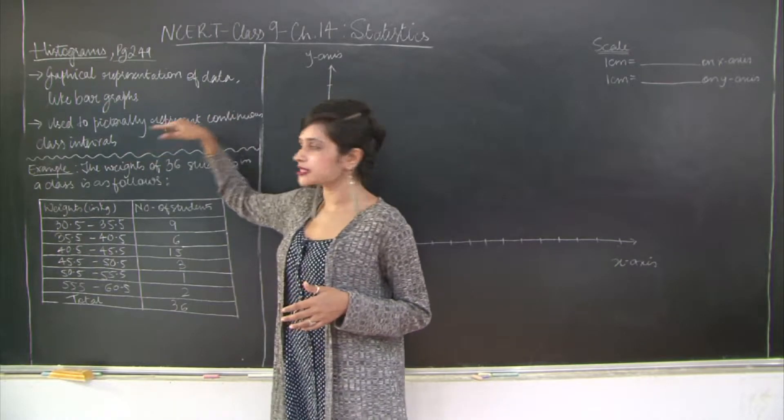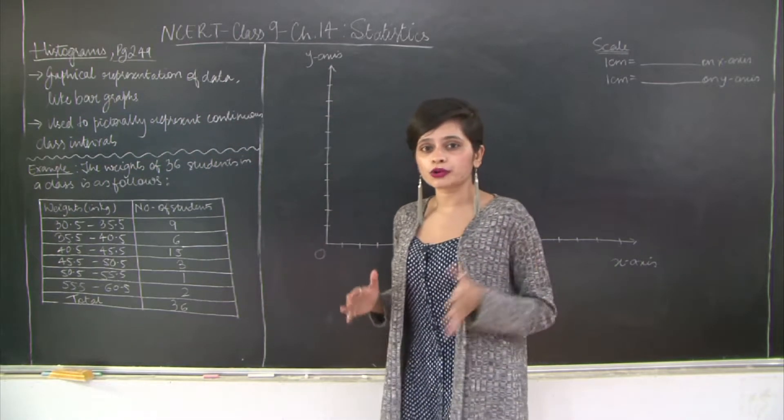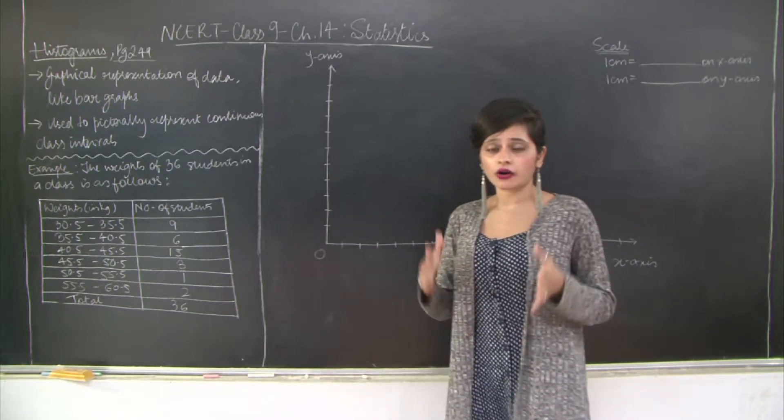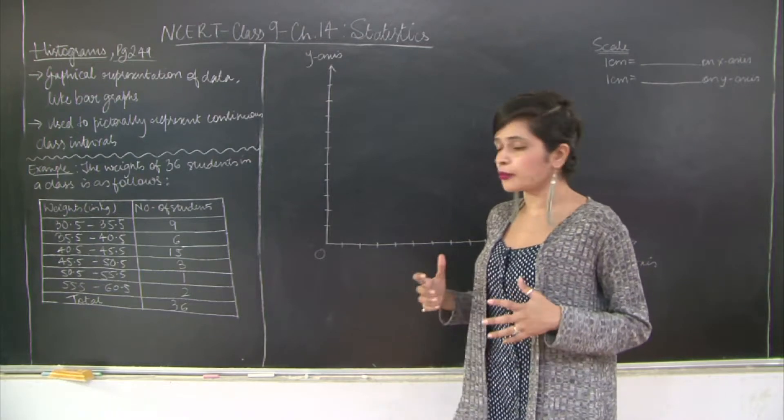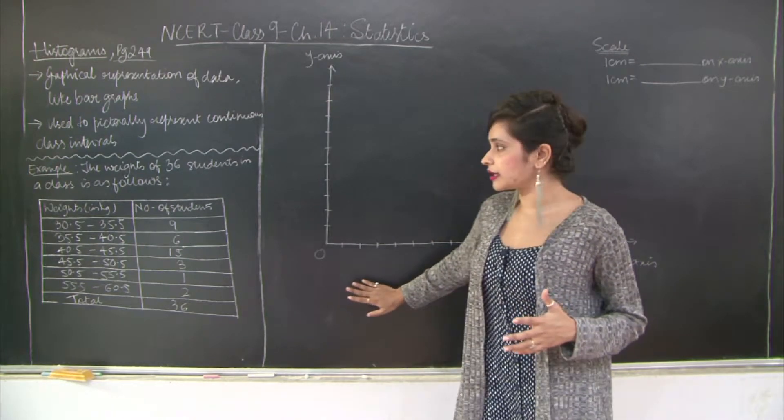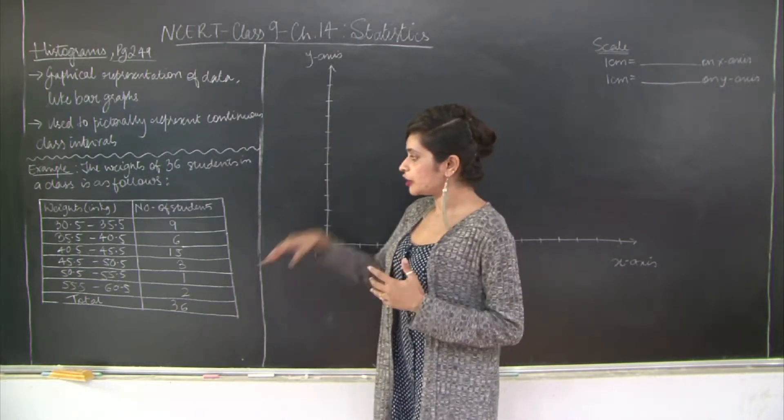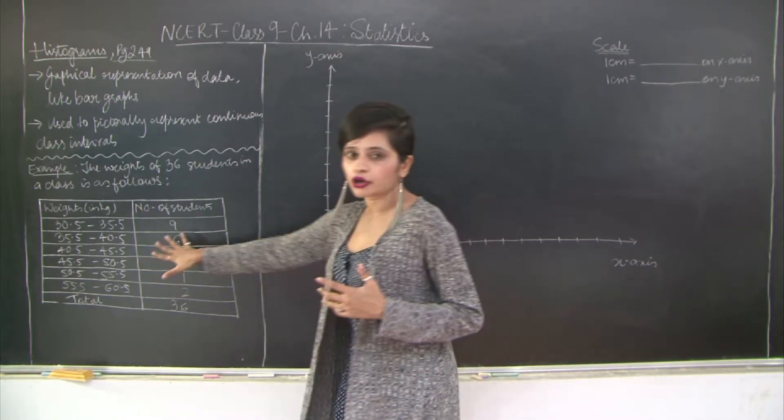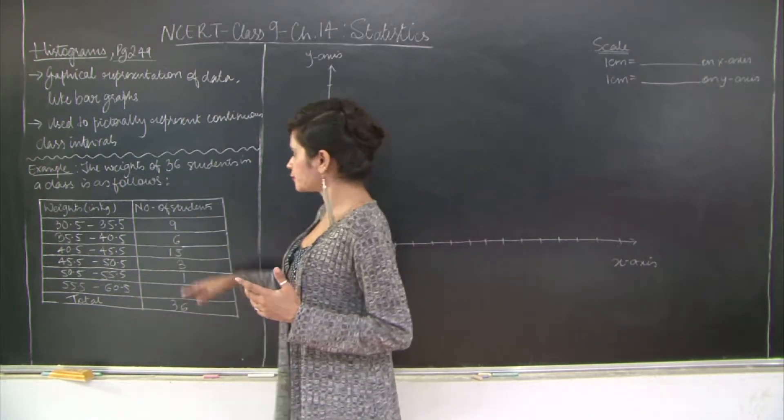We are going to take into account continuous class intervals, and the bars that would be drawn, the area of the bars, are going to be proportional to the frequencies. This is a very important point. Let's take a look at an example on page 249 of your textbooks.